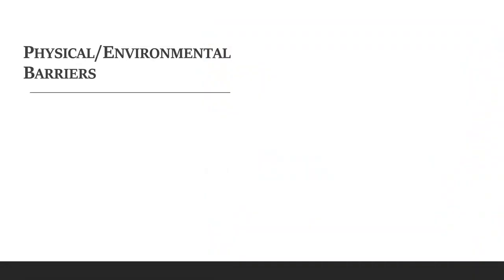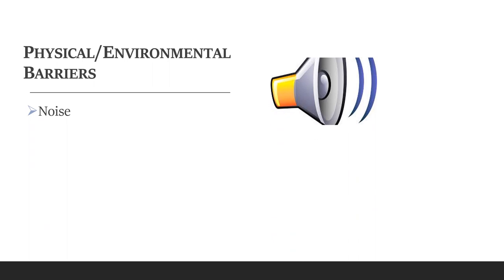Let's first have a look at physical or environmental barriers. Physical and environmental barriers are associated with the environment surrounding us. Often we use the term noise to refer to the physical barrier in general. Noise is the first major barrier — it can be the noise of traffic, a poor signal while talking on a cell phone, or a disturbance around us. This is very commonly found.